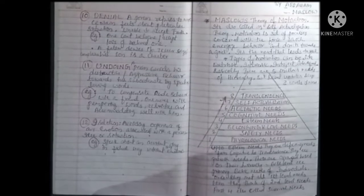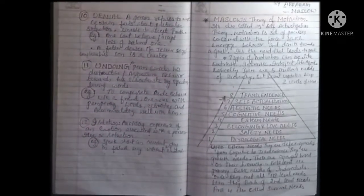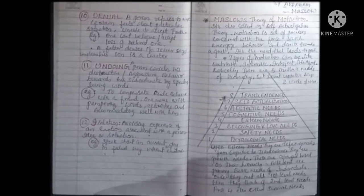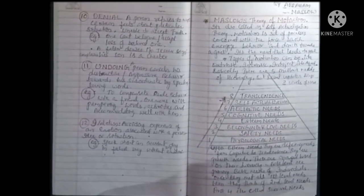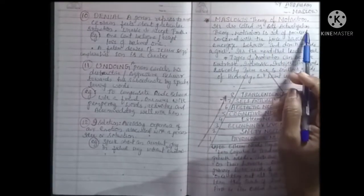Maslow's theory of motivation or Maslow's hierarchy of needs. It is given by Abraham Maslow. It is also called the self-actualization theory.